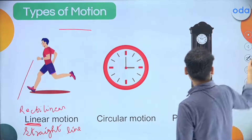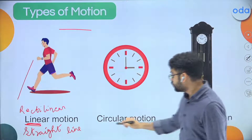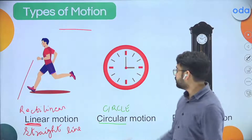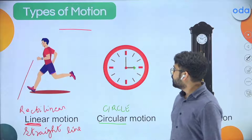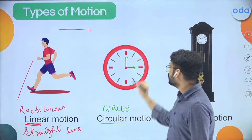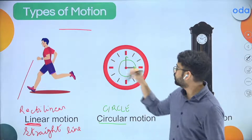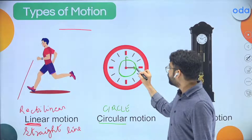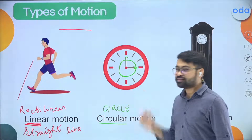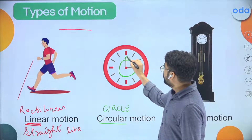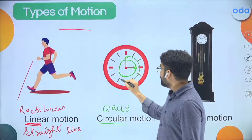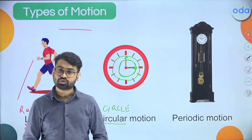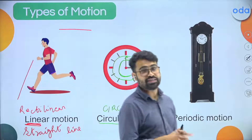The next one is circular motion. Whenever I see circular, I understand the word 'circle' — motion that happens in a circle. How does this circular motion happen? Let's say I'm talking about the hour hand of a clock — the hour hand goes around like this. The tip of the hour hand goes on a circle, hence it undergoes circular motion. The minute hand also goes like this and undergoes circular motion. The tips of the minute hand, second hand, and hour hand all undergo circular motion.